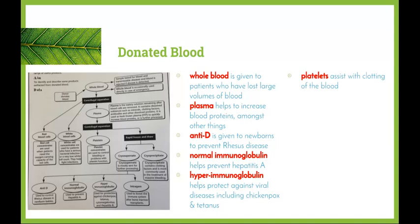Platelets are the tiny cell fragments within our blood that help with clotting. If a patient has a disease such as hemophilia, which prevents their blood from clotting properly, they can be given a platelet infusion — especially in a trauma situation with excess bleeding. The platelets will help to clot the blood and stop the bleeding.